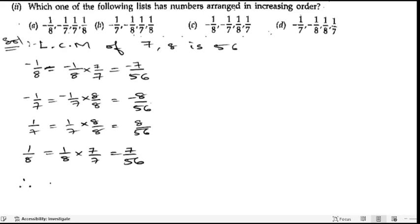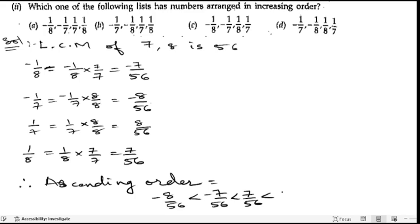Therefore, ascending order is: -8/56, next is -7/56, then 7/56, then 8/56. Now let us write down their actual form, that is the simplest form.